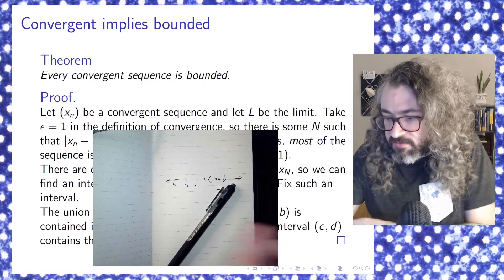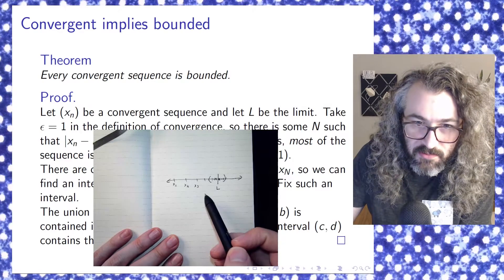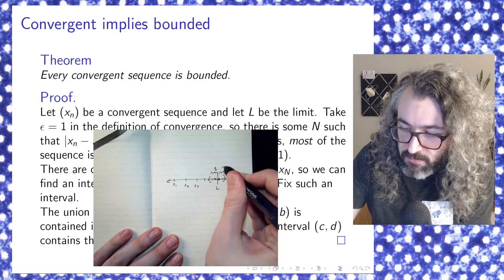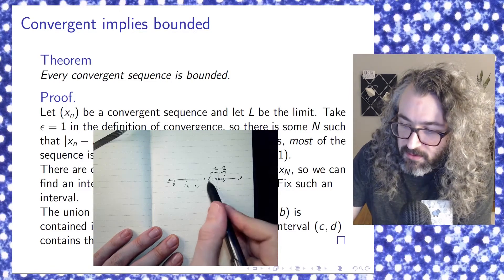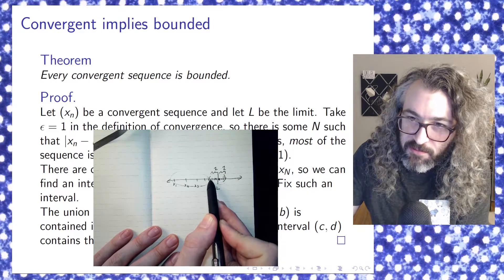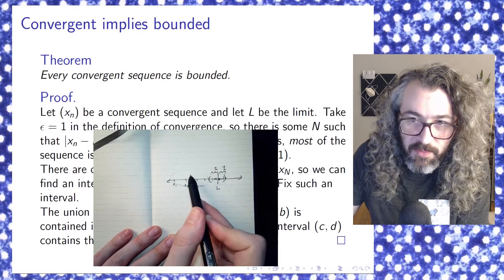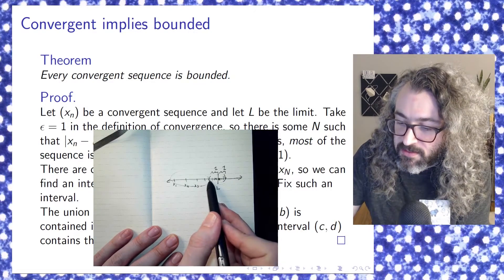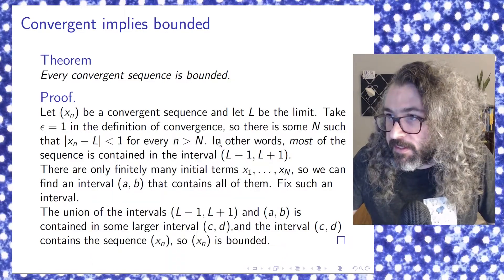Just to demystify this as much as I can — all the proof is saying is this: if you've got a convergent sequence, you take the interval of radius one centered at the limit. Most of the terms in the sequence wind up inside the interval of radius one centered at the limit. Finitely many of the terms end up outside of that, but there's only finitely many of them. So we've broken this sequence up into two pieces. Both of those pieces are bounded, and so the whole sequence is bounded too.